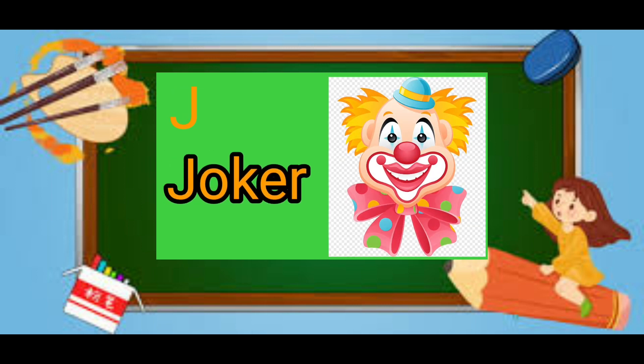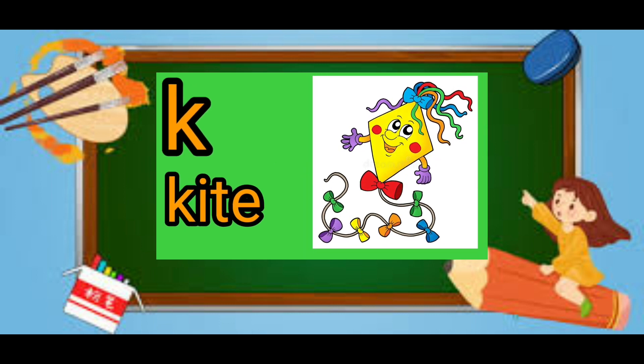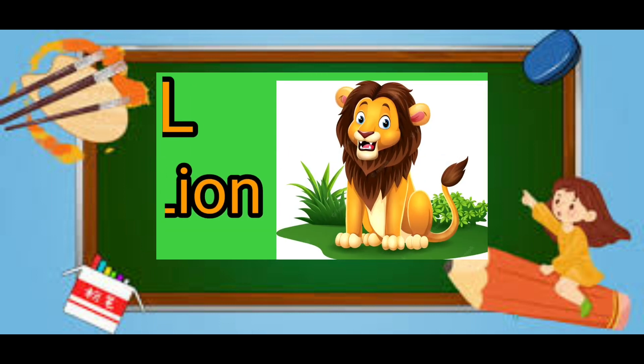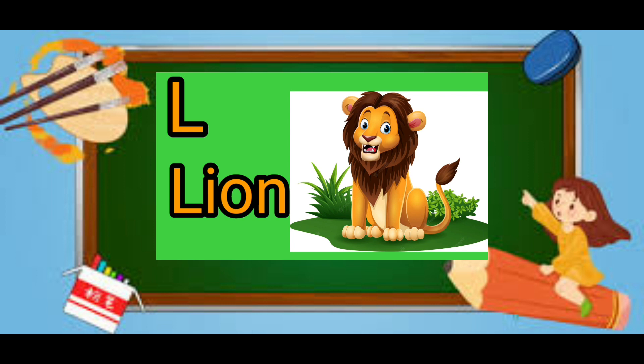J for joker, joker means choker. K for kite, kite means patang. L for loin, loin means share.